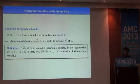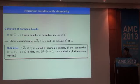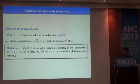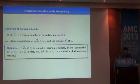Let me give the precise definition of harmonic bundles. We consider Higgs bundles with metric. Then we have a Chern connection, which is the unique unitary connection whose (0,1)-part is equal to the holomorphic structure. We also have the adjoint of theta. The Higgs bundle with metric is called a harmonic bundle if the connection given by the sum of these operators is flat. In that case, the metric is called the pluri-harmonic metric. This is the definition of harmonic bundle as a Higgs bundle with a pluri-harmonic metric.